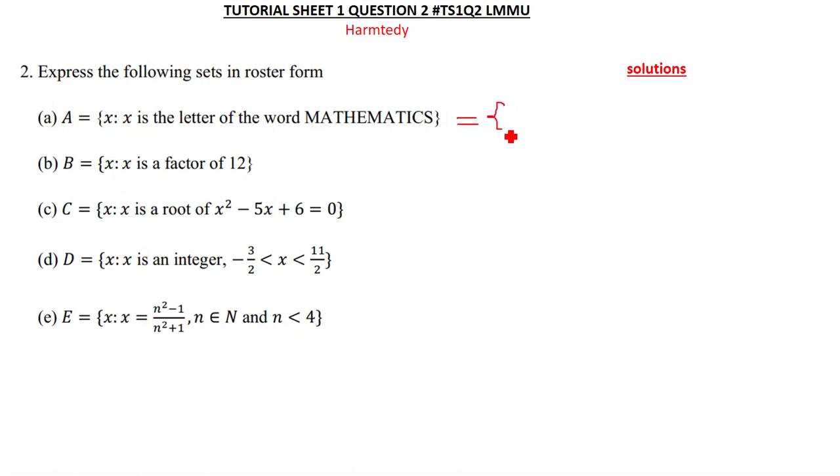When you are writing it in roster form, you just write all these letters independently. So when you write M, you write a comma, A, you write a comma, then T, you write a comma. You just write them independently and then you close the brackets. So that is simply what I mean. Let's move on to the next question, which says B is equal to x is such that x is a factor of 12.